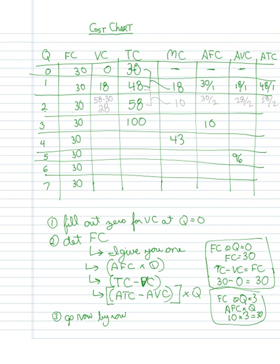Now, in quantity two, I can see that I have a total cost of fifty-eight. Fixed costs are thirty, so this would be fifty-eight minus thirty, which would give me twenty-eight.